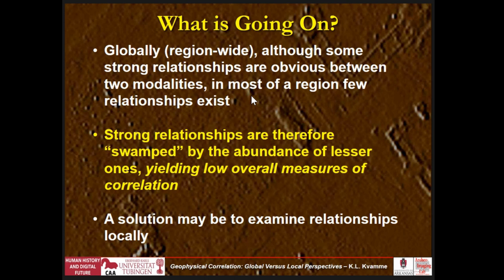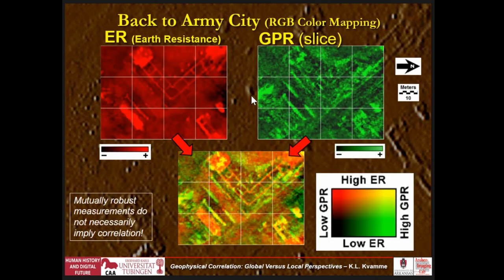What's going on is that globally, although we see some strong relationships in parts of the region, in most of the region there are very weak relationships. The larger area of no relationships overrides the smaller areas with strong relationships — they're swamped by the abundance of lesser patterns. Perhaps a solution is to look at local correlation, which we decided to do.